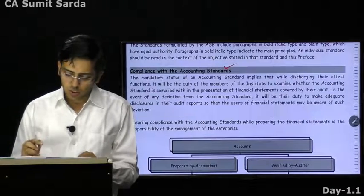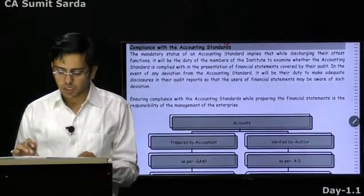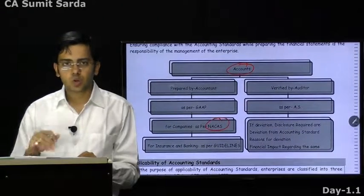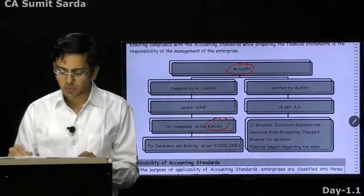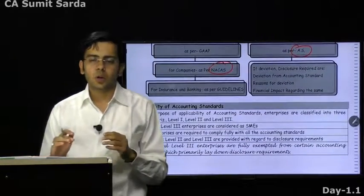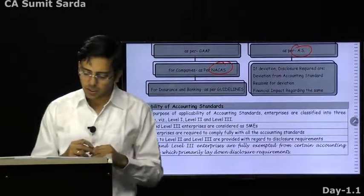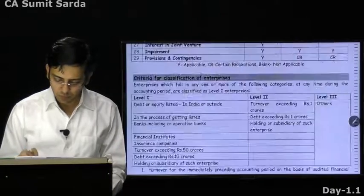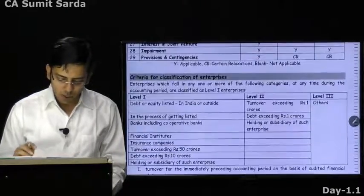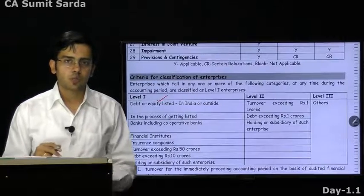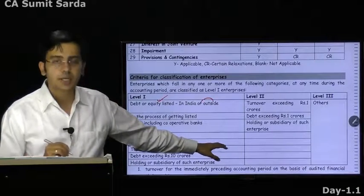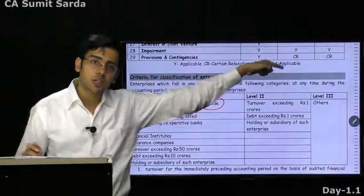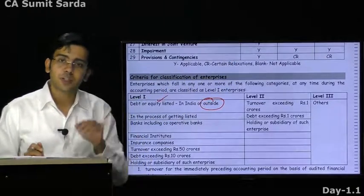Compliance with accounting standards — whose duty is this? It is basically the management that is supposed to comply. AS cannot be blindly applied to all enterprises, so enterprises have been split into 3 parts: Level 1, Level 2, Level 3. Who are Level 1 enterprises? Anyone listed or in the process of being listed — and this includes outside India as well. A company with just a branch office in India but listed on NASDAQ has to be a Level 1 enterprise in India too.